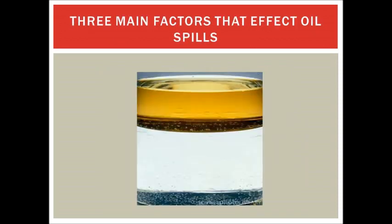There are three main factors that affect oil spills: specific gravity, surface tension, and viscosity. Since oil is lighter than water, it forms a layer on top of the water. The higher the surface tension, the more likely the oil will remain in place. The higher the viscosity of oil, the greater the tendency to remain in place.